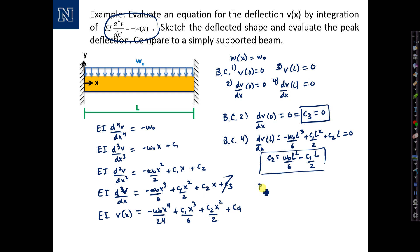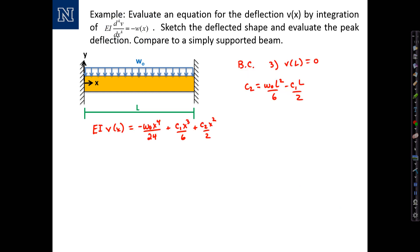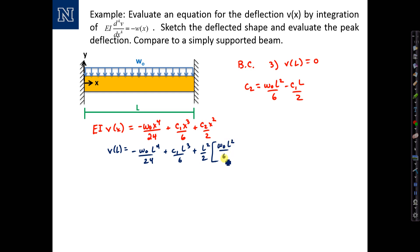Applying boundary condition 1 — V(0) equals 0 — all terms drop out except C4, so C4 equals 0. We're left with EI·V(x) equals that equation. We have the last boundary condition to apply and we know the relationship between C1 and C2. Applying V(L) equals 0: negative W-naught·L⁴/24 plus C1·L³/6 plus L²/2 times (W-naught·L²/6 minus C1·L/2). Careful math is required here — set this equal to 0.